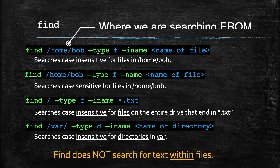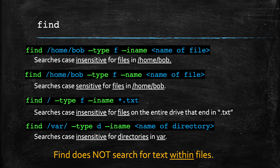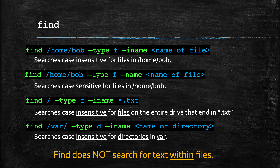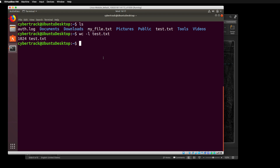The next part is going to be where we're searching from. So in this first example, find slash home slash Bob, we're searching from the home Bob directory. Then we specify the type of file — we can search for a directory or a file. A directory is just a folder like you might see on your Mac or Windows computer. Then we add dash type f for file, then dash iname for case insensitive name, and type in the name of the file we're looking for.